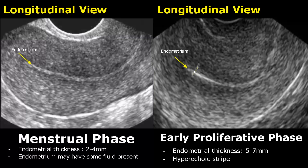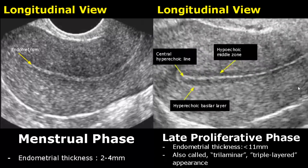In the second image we have the early proliferative phase, in which the endometrial thickness is between 5-7 mm. The endometrium just appears as a hyperechoic stripe. The menstrual phase image is used just for comparison with the other phases.